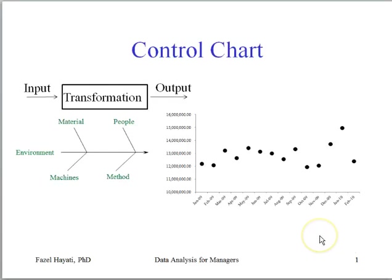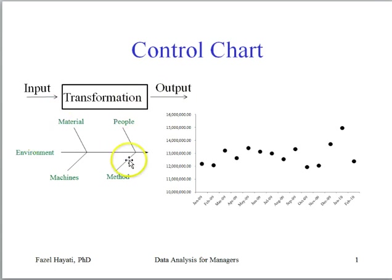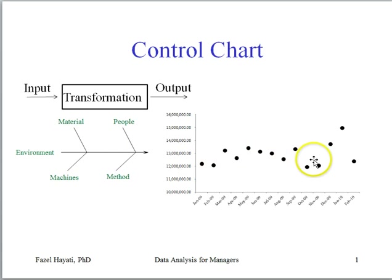In this lecture, we review some applications of quality control charts. A process is the transformation of input into output, and the output is affected by a number of causes and their interactions, which produces variability in the output.